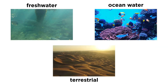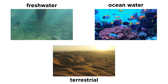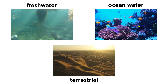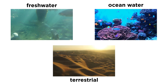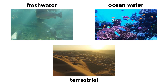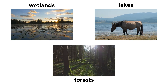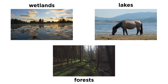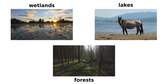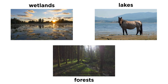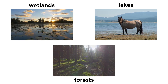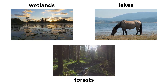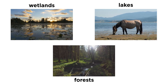The three broad categories of ecosystems based on their general environment include freshwater, ocean water, and terrestrial ecosystems. Within these broad categories are individual ecosystem types based on the organisms present and the type of environmental habitat, such as wetlands, lakes, and forests, all of which we will explore in detail later in the series.